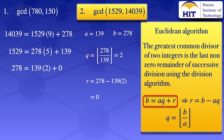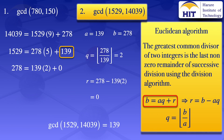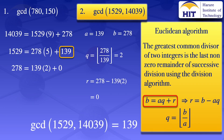We now have a remainder of 0, so that's where we stop. We look at the last non-zero remainder, which is 139. The Euclidean algorithm says that this last non-zero remainder is the greatest common divisor of those two numbers. Therefore, the greatest common divisor of 1529 and 14,039 is 139.